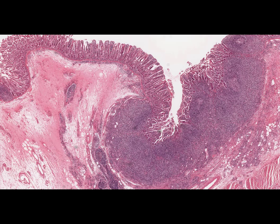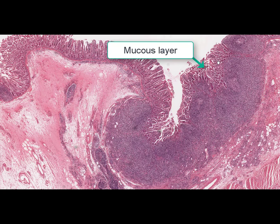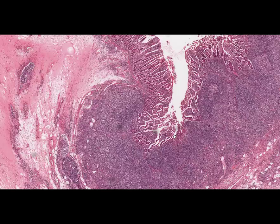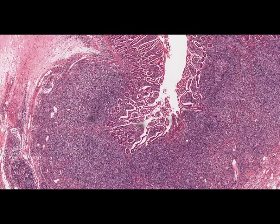On this slide we can see a terminal part of the ileum, which is a typical affection site of this infection. The type of affection is usually catarrhal or ulcerative catarrhal enteritis. At low magnification we can see the mucous membrane of the terminal part of the ileum, as well as the submucous layer and the muscular layer. The mucous membrane is edematous, and that is why the intestinal lumen is narrowing.